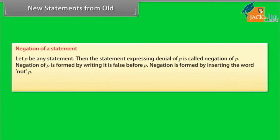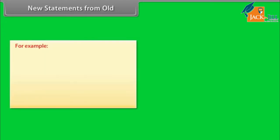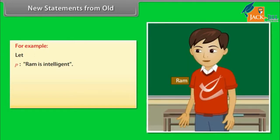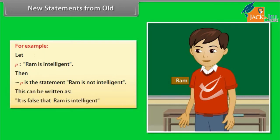Negation of a statement: Let P be any statement. The statement expressing denial of P is called the negation of P. Negation of P is formed by writing 'it is false' before P, or by inserting the word 'not'. Negation of statement P is denoted as not P. For example, let P be the statement 'Ram is intelligent.' Then not P is the statement 'Ram is not intelligent,' or 'It is false that Ram is intelligent.'